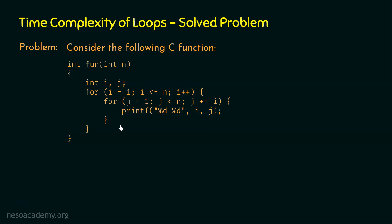In the outer for loop, variable i is initialized to 1, i is compared with n, and i is incremented by 1. This for loop will execute n times because i receives values 1, 2, 3, 4, and so on up to n. This means i has received n values, and therefore there are n iterations of this outer for loop.